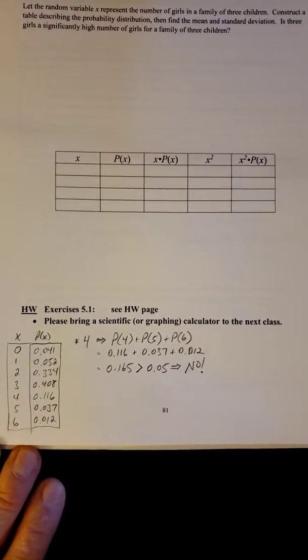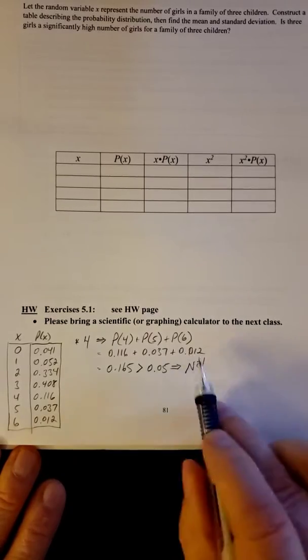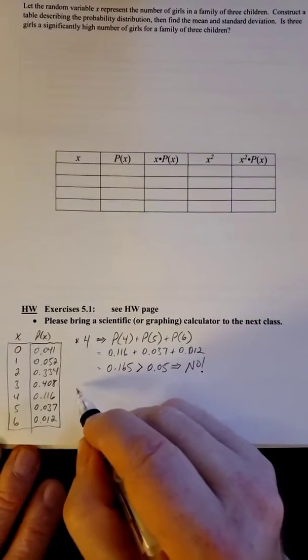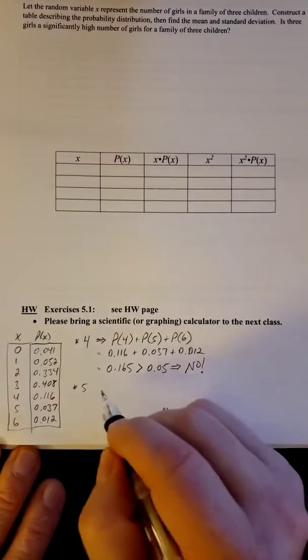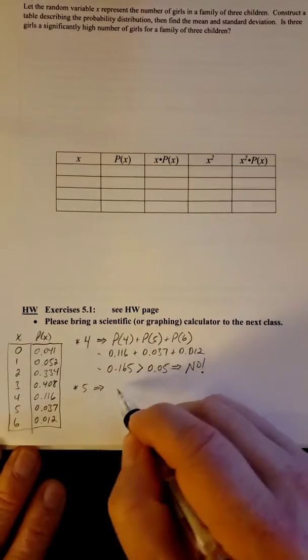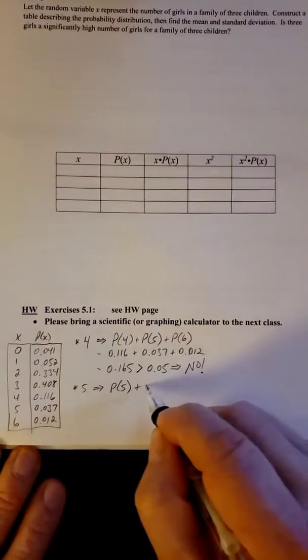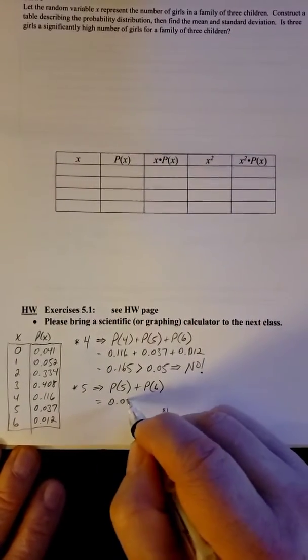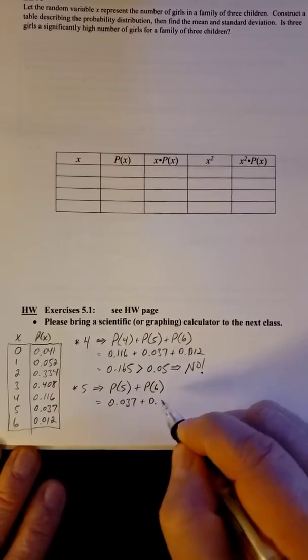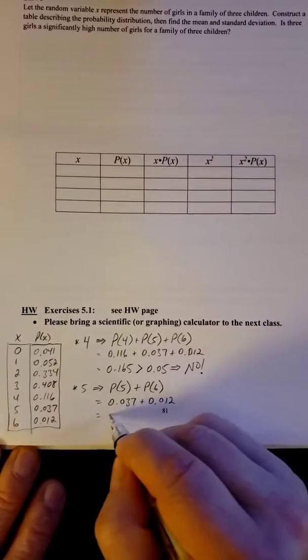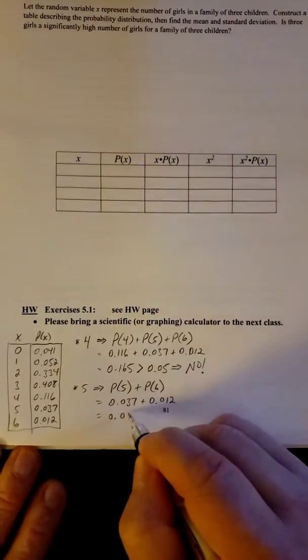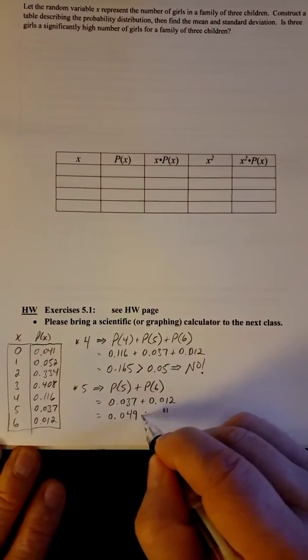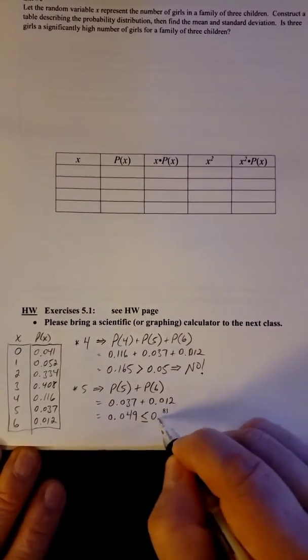4 is not significantly high because that probability from that point and up is greater than 5%. Now they also wanted you to look at 5. Is 5 significantly high? Well now we're only looking at the probability of 5 and up. So the probability of 5 and 6. So we had 0.037, 0.012, which we can add that up without a calculator. So that's 0.049.